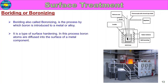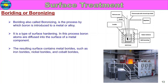It is a type of surface hardening. In this process, boron atoms are diffused into the surface of a metal component. The resulting surface contains metal borates, such as iron borates, nickel borates, and cobalt borates.